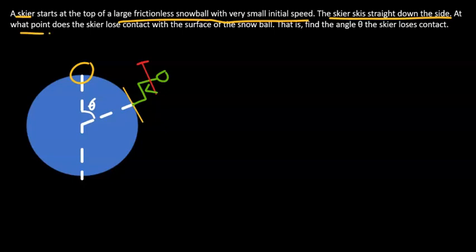The skier skis straight down the side. At what point does the skier lose contact with the surface of the snowball? So let's assume the skier loses contact at that point. Find that angle theta.